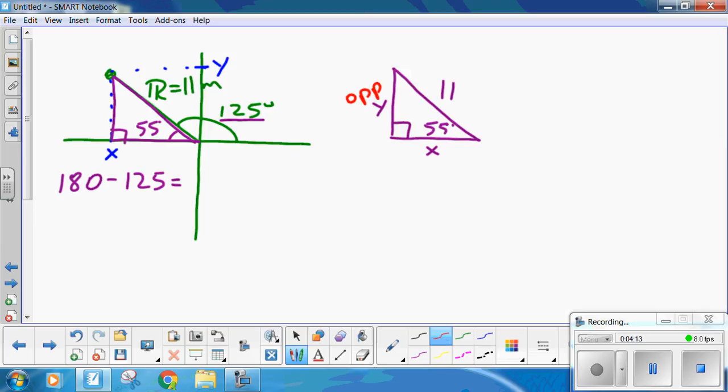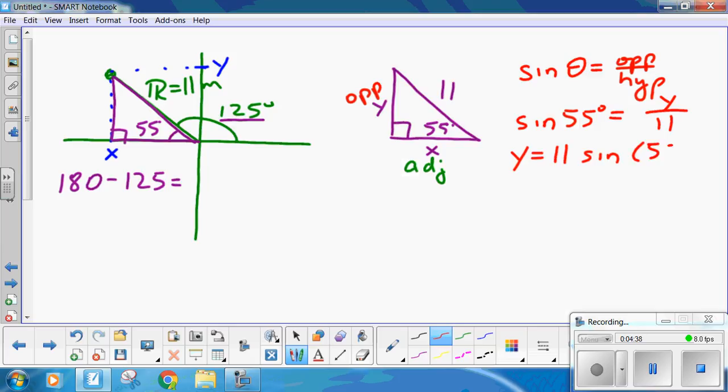So, this is the opposite. This is the adjacent. I'm going to do the opposite side, or y. Opposite in hypotenuse. So, the sine of 55 degrees equals y over 11. So, y equals 11 sine 55. Be careful how you put this in your calculator. Some of the TIs are quite picky about this. I do suggest 11 sine 55. And you get 9.0 meters. For my crude drawing, that seems quite reasonable. So, y is 9.